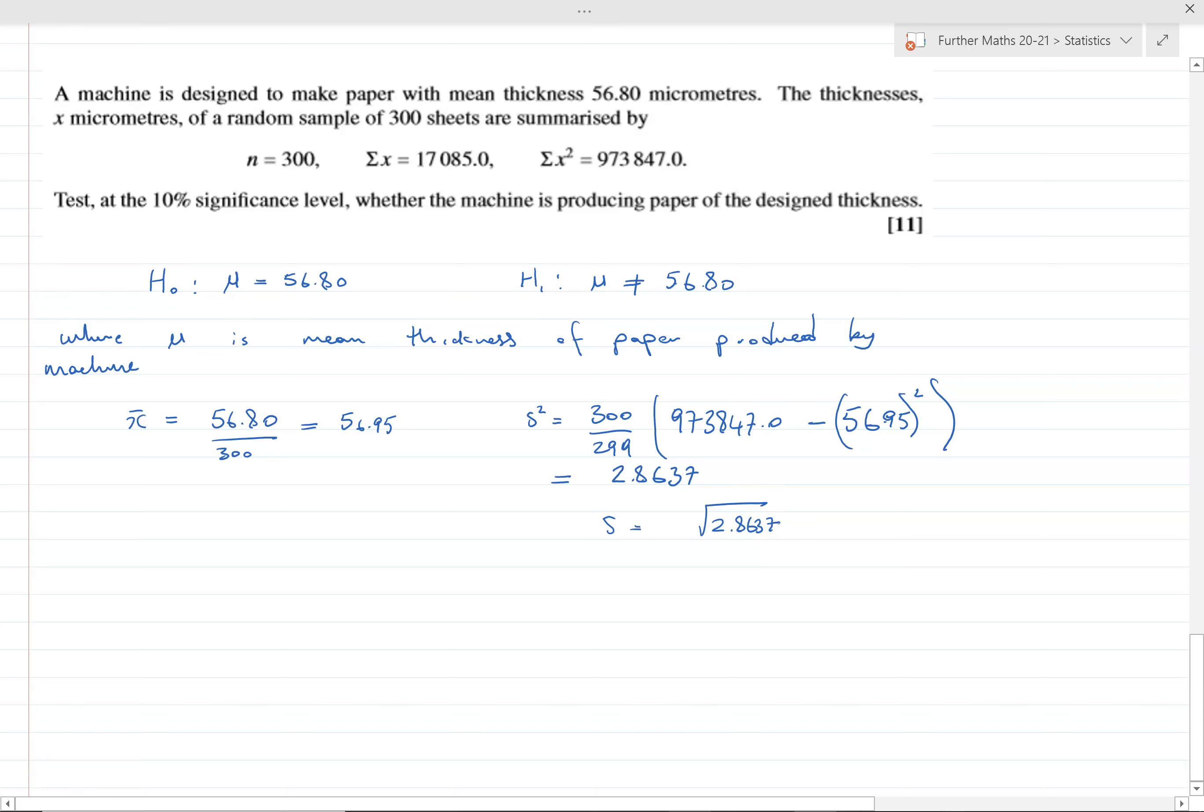Now we need to do our hypothesis test. Let's write our distribution, the sampling distribution. It's normally distributed, approximately, because of the size of the sample.